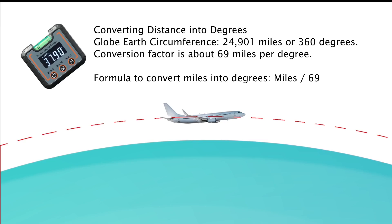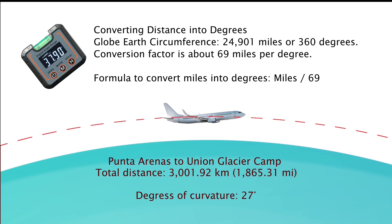Now let's start with Punta Arenas, which is the departure point to head to the Union Glacier Camp in Antarctica for the final experiment to observe the midnight sun. And that will actually be a total distance of 1,865 miles. So that should give you a measurable curvature of 27 degrees. That's quite a significant amount that should be measurable, not just calculated because you've traveled a certain distance, but actually measured as a change in the number of degrees.